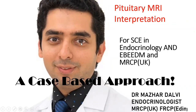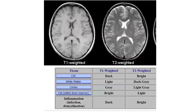Today's topic is about pituitary MRI interpretation. Let's start by looking at the normal MRI pituitary — the normal scan in terms of the T1 and the T2 images.